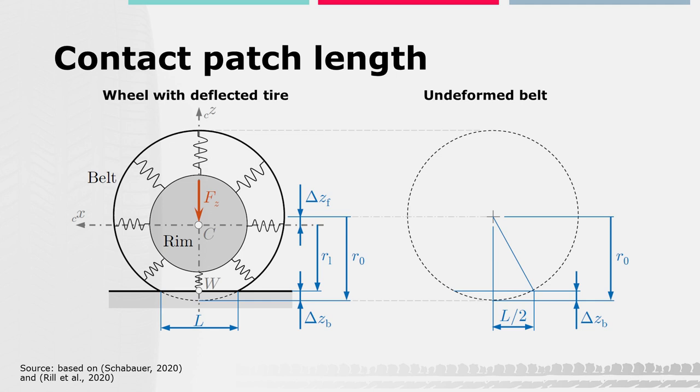Let's go back to the simple model from earlier and take a look at what tire deflection means for the contact area between tire and road, which is called contact patch. The resulting contact patch length L can be approximated by means of a simple geometric approach. Assuming the undeformed belt is a circle and using the geometric relations shown on the right, we can derive a relationship between the half of the contact length L, the belt deflection delta Zb and the unloaded tire radius R0.